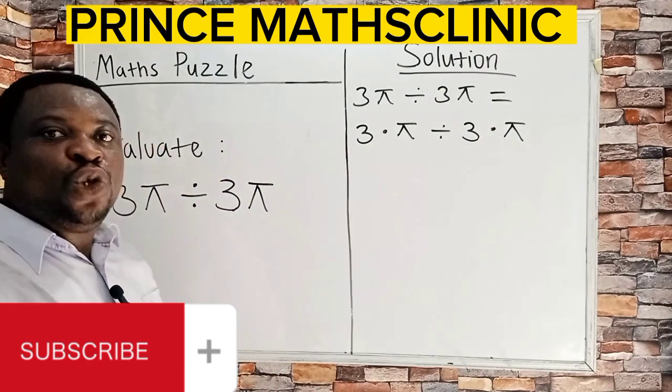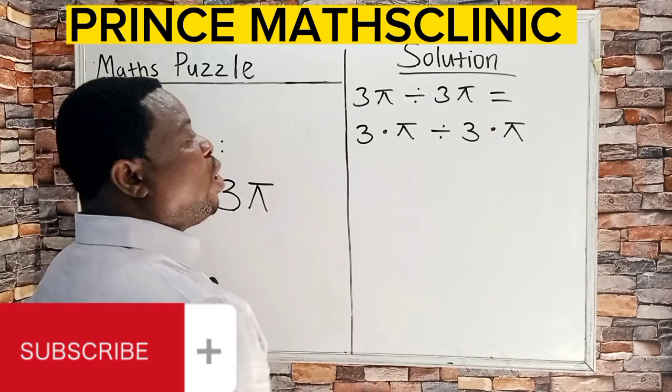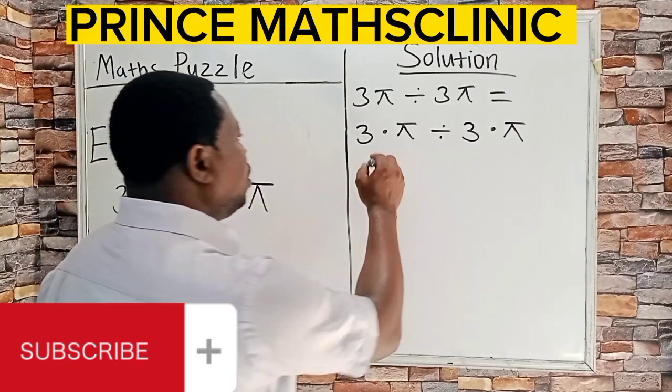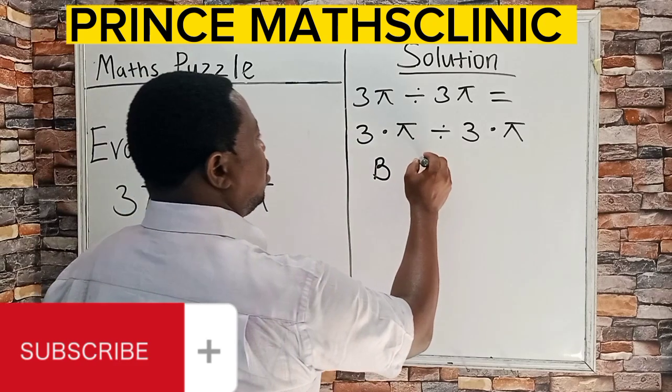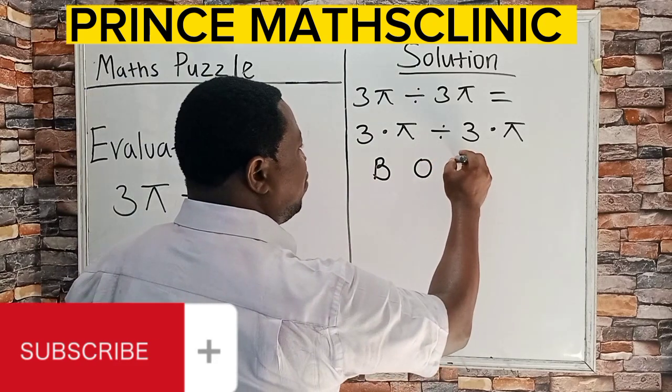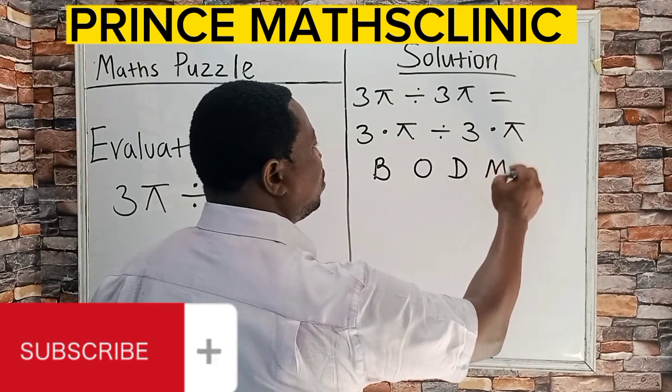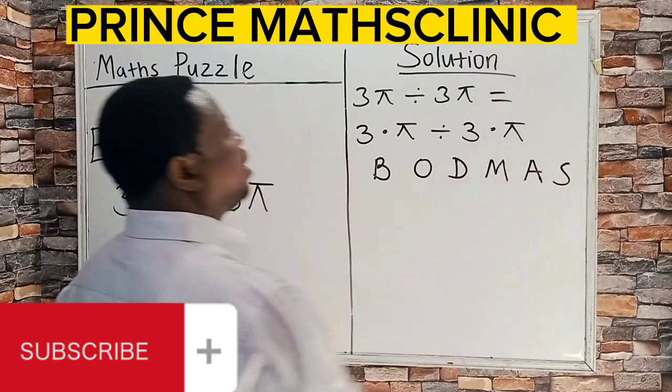At this stage, we need to introduce the law of precedence or order. And what does that law say? It says in any mathematical operation, you treat bracket first, before of, then division, afterwards multiplication, then addition, and lastly subtraction.